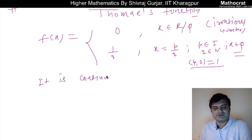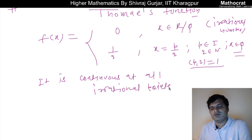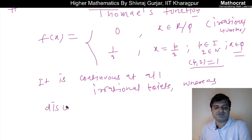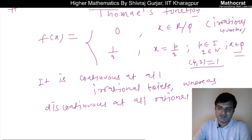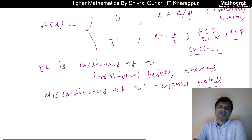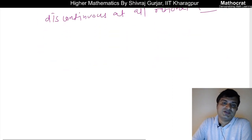The Thomae function is discontinuous at all rational points and continuous at all irrational points. Proving discontinuity at rational points and continuity at irrational points is a very important and good question. Let's prove continuity at irrational points first.